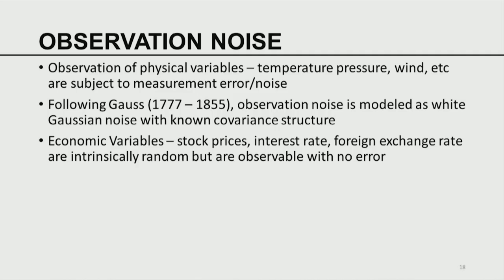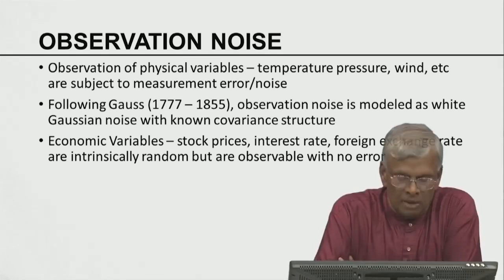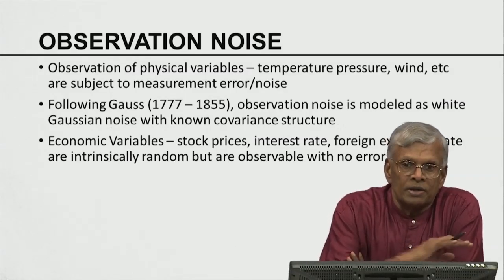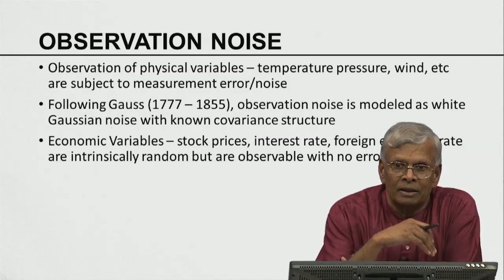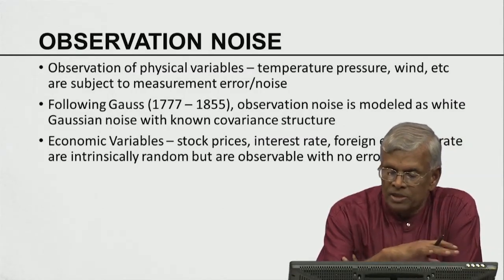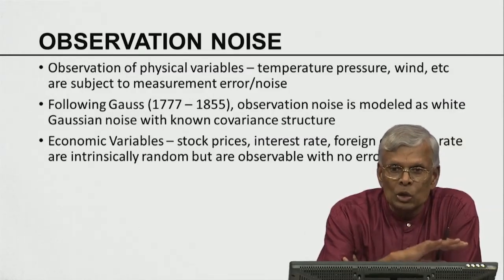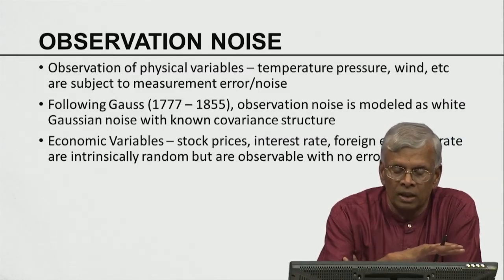In the last lecture, we have been talking about the holistic view of data assimilation, the role of models, the role of observation. Within the context of observation, we started talking about observation noise. Observation noise depends on the instruments used to measure the observation. Satellite observations have certain kinds of error structure. Radar observations have different kinds of error structures. All these physical quantities — pressure, temperature, humidity — we measure with instruments and they are always inherently associated with observation noise. This observation noise is modeled as a white Gaussian noise with a known covariance structure.